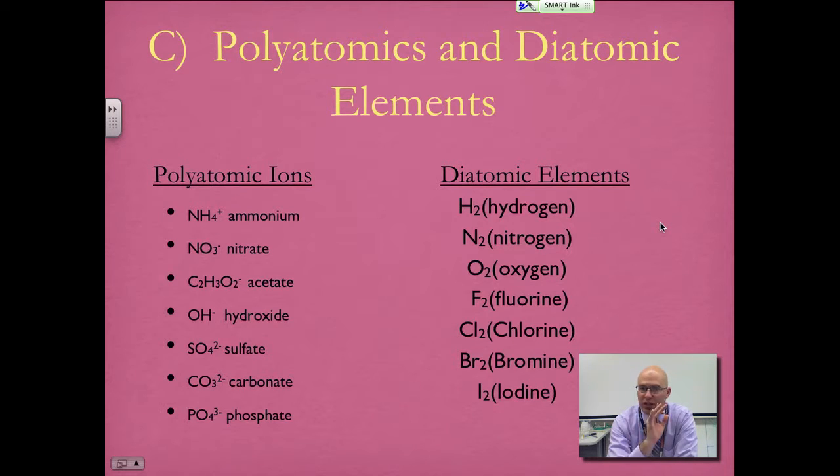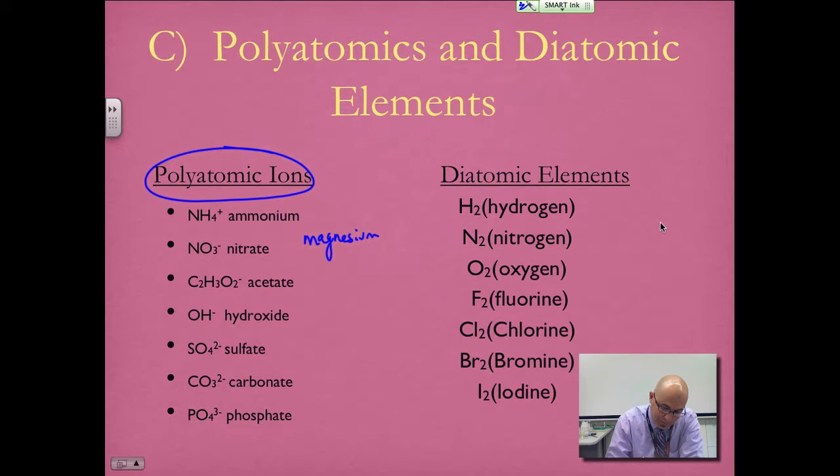As a quick reminder on polyatomic ions, if you hear a word equation that says magnesium nitrate, you should recognize that magnesium is a 2+ charge because it's an alkaline earth metal. Nitrate is one of those polyatomics you need to know, and it has a -1 charge.